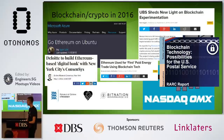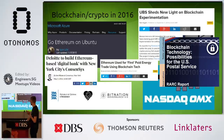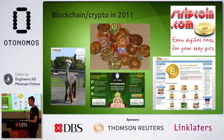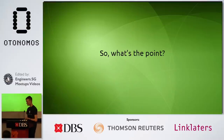Here's where we are now in 2016: Microsoft Azure, Go Ethereum on Ubuntu, Deloitte building an Ethereum-based digital bank, New York City's Consensus, Republic of Estonia e-residency partnership, Bit Nation Governance 2.0, Ethereum used for the first paid energy trade using blockchain technology, UBS blockchain experimentation, possibilities for the US Postal Service, NASDAQ OMX. From there to here in five years — welcome to the speed of modern technological development.